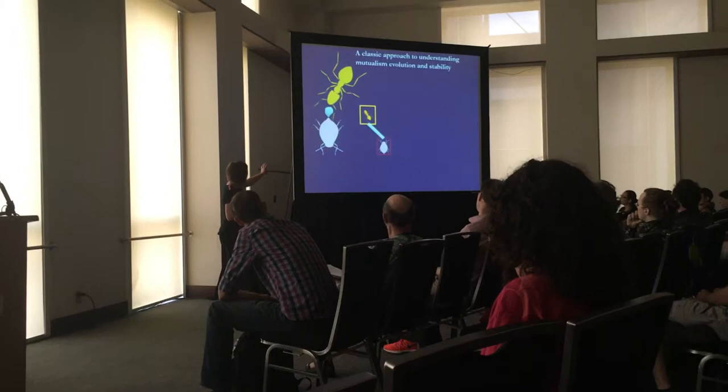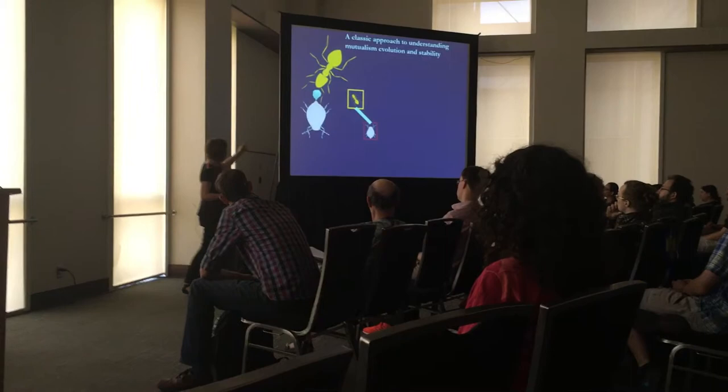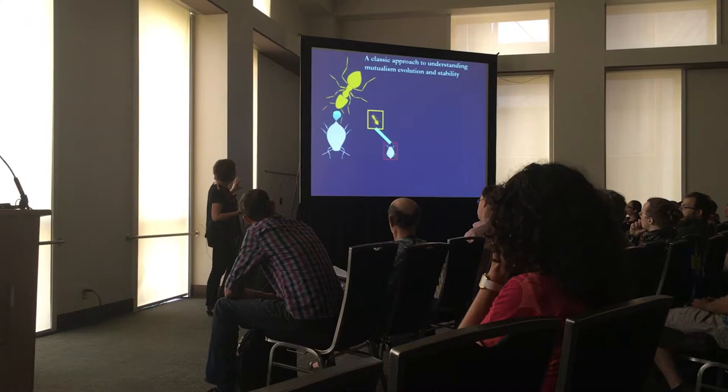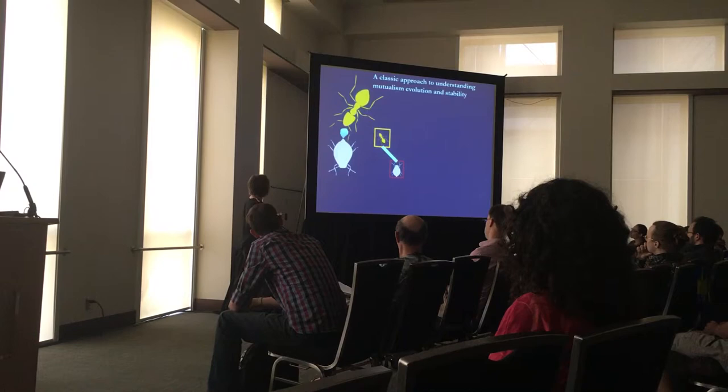Mechanisms such as partner choice and partner fidelity ensure that time and time again these two species engage in an interaction, resulting in a very firm link between the two species. However, as you already saw briefly, they are not the only ones. Often it's not just one ant interacting with one aphid — there will be multiple species of ants interacting with multiple species of aphids. And in fact, they will not be the only organisms involved.